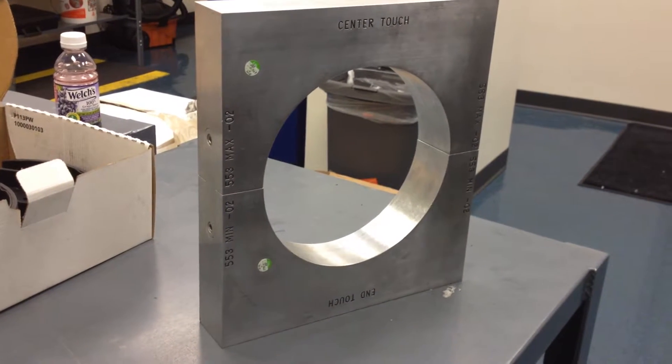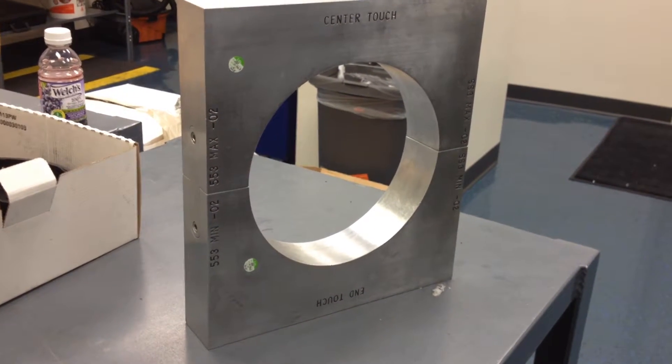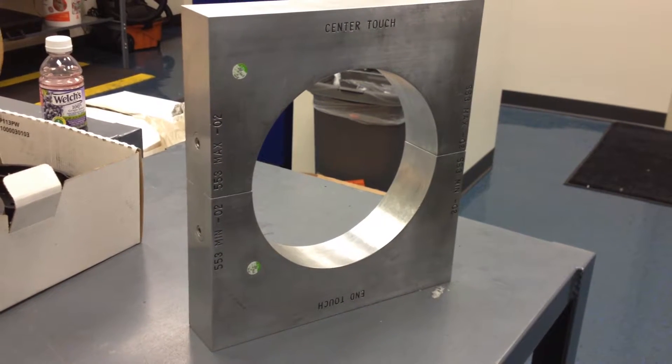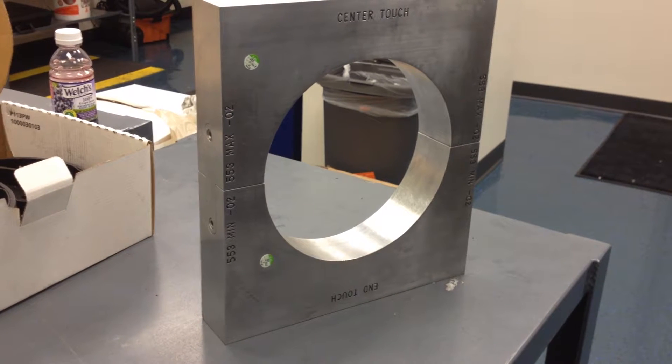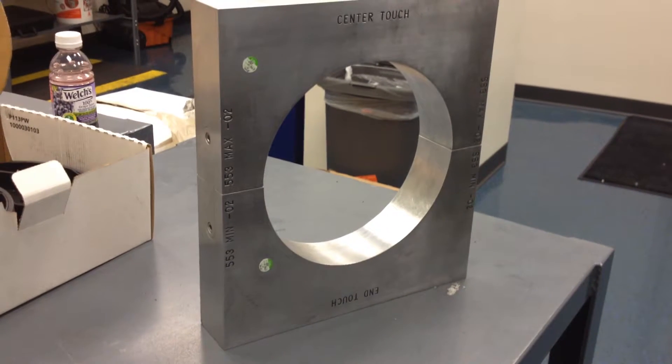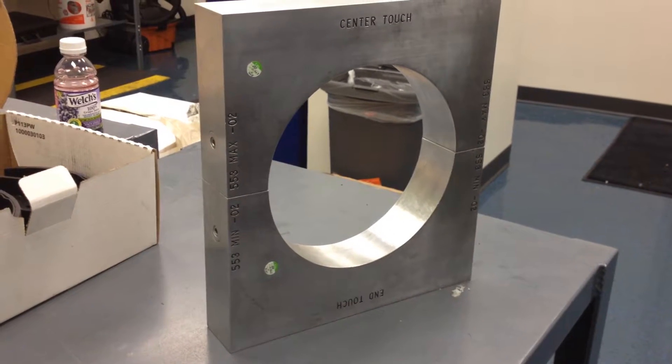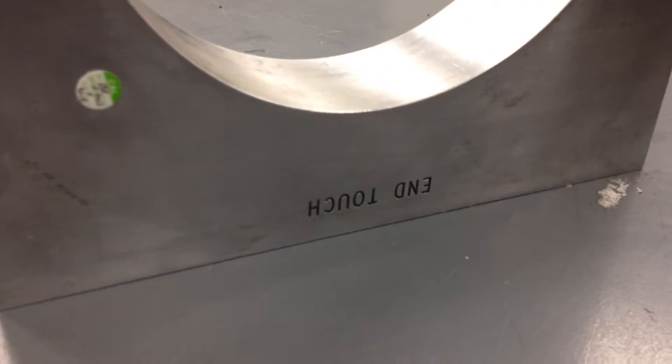You may have two separate half-moon fixtures, but the intention here is to demonstrate the small side and the large side of the fixture. The smaller side is marked as end touch, which is this side right here.